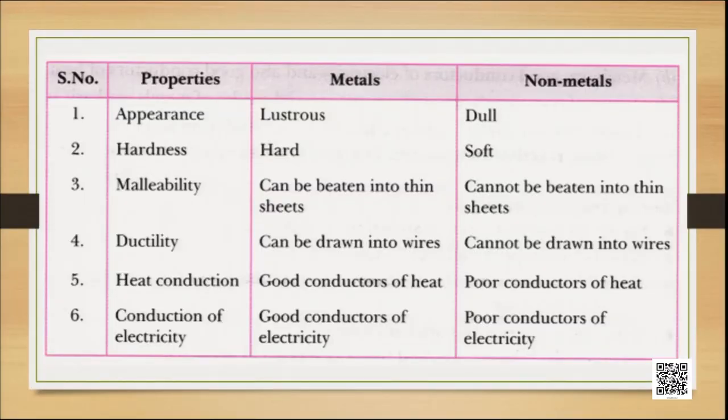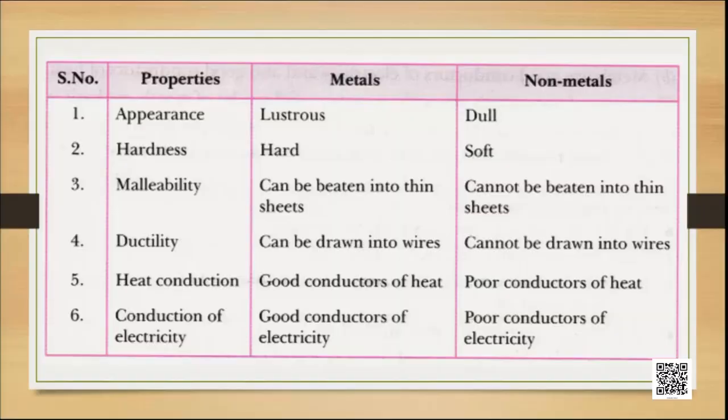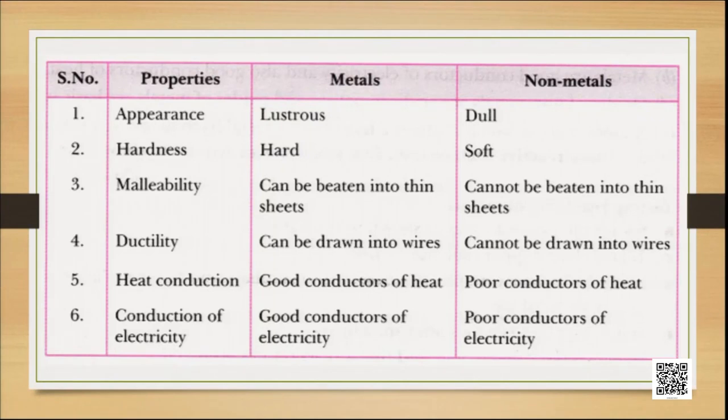Silver and copper are very good conductors of heat. We use these properties in our day-to-day life. Moving on to conduction of electricity: metals are good conductors of electricity, and because of that, all electrical equipment and wiring are made up of metal. On the other hand, non-metals are poor conductors of electricity, and that is why they are called insulators. But chemistry is full of exceptions — in case of non-metals, carbon in the form of graphite can conduct electricity.